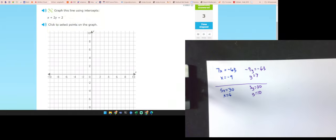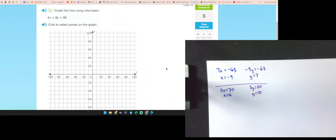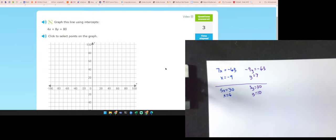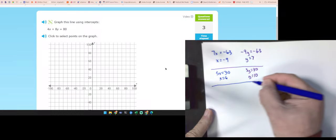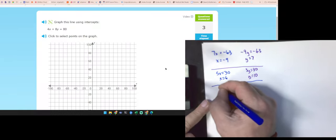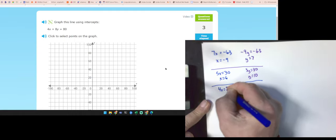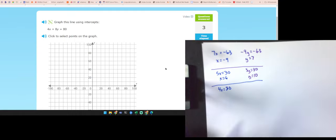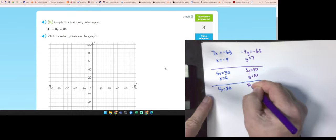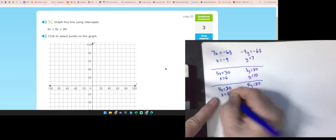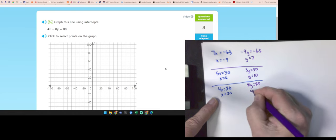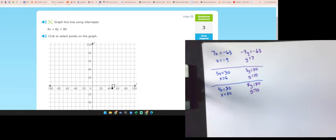So those are level one questions. Here's some level twos. Looks like the only difference here is they're using some bigger numbers. Again, use the calculator if you need to. Here, 4X equals 80 and 8Y equals 80. Divide by 4, I get X is 20. Divide by 8, and I get Y is 10. So X is 20, Y is 10.